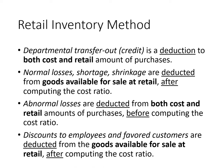Abnormal losses are deducted from both cost and retail amounts of purchases before computing the cost ratio. In cost accounting, abnormal losses are not product costs — they are period costs — so we remove them from the computation of goods available for sale and the cost ratio. For normal losses, if both a cost amount and retail amount are given in the problem, ignore the cost amount; only the retail amount is used.